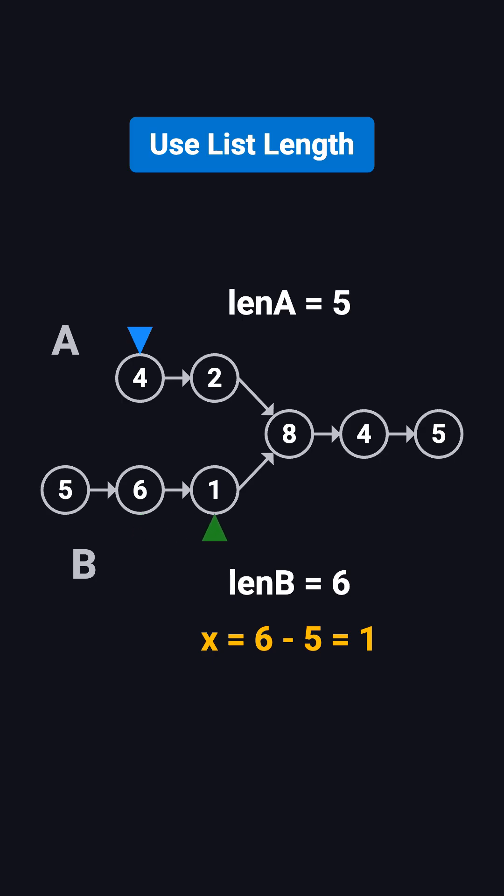After that, we move both pointers together, and the first time they meet, that's the intersection. This method doesn't use extra space, but it requires traversing the lists twice, so it feels a bit more complicated.